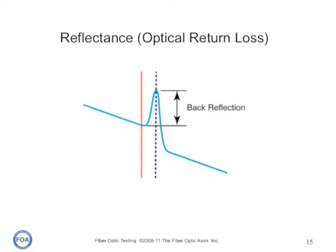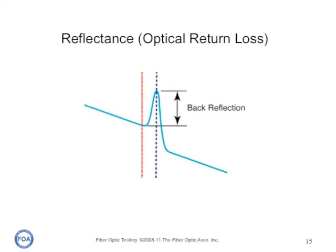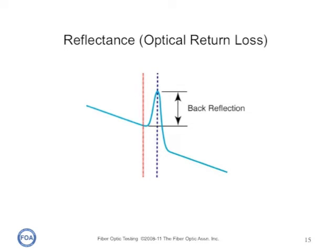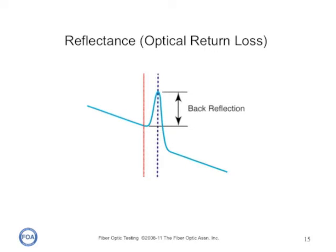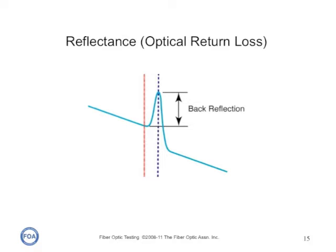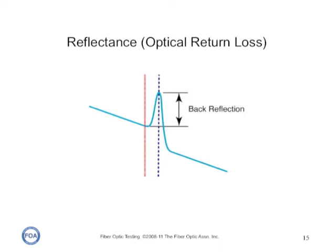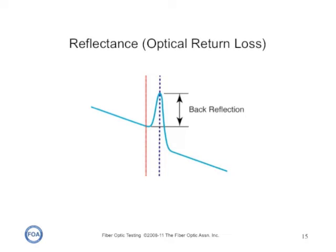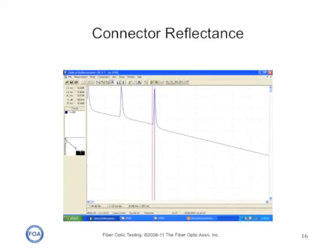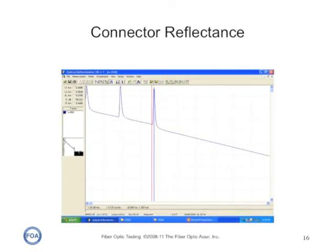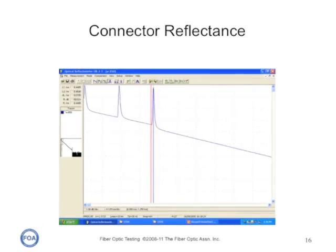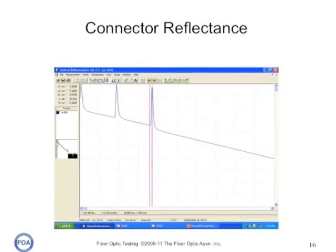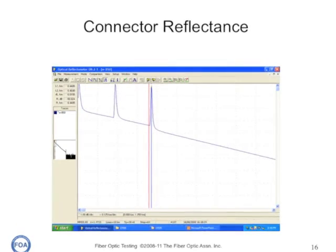OTDRs are also programmed to measure the reflectance of an event. What it does is look at the light reflected back from the event compared to the backscatter level and calculates the actual reflectance. Like other reflectance measurements, it isn't very accurate — probably no better than one or two dB uncertainty — but it gives a good indication of when an event is highly reflective and shows where those reflective events are in the cable plant. The left-hand marker goes before the event and the right-hand marker goes at the peak of the event, which are the calculation points for the OTDR.